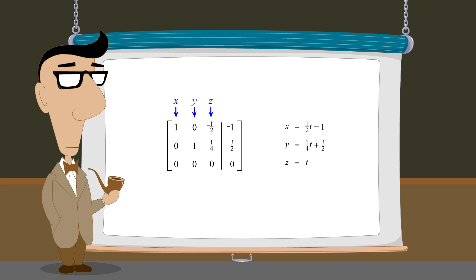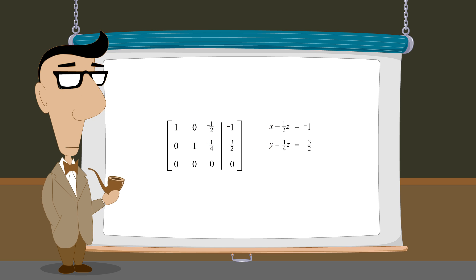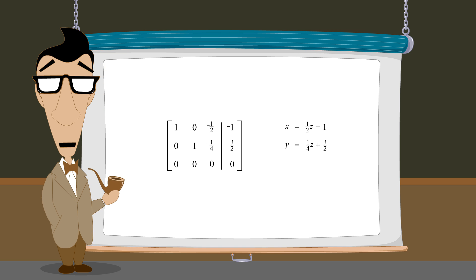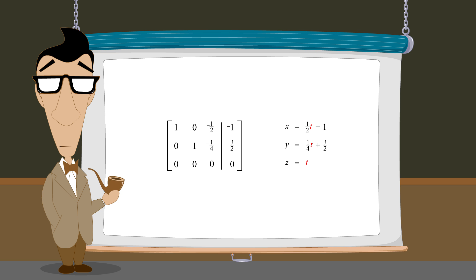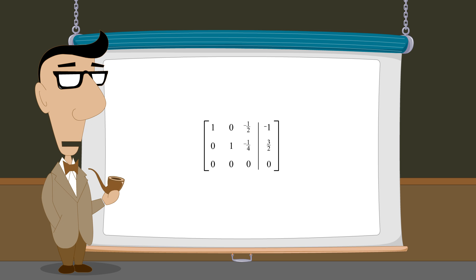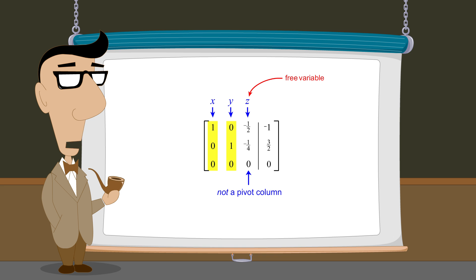Creating this set of parametric equations was simple. Since each dependent variable had a coefficient of 1 and appeared in only one equation, it was a simple matter to rewrite those equations so that each equation equated one dependent variable to an expression containing only the free variable. That free variable was then set equal to an independent parameter, which could then replace the free variable in the other equations. This gave us a set of parametric equations expressing each system variable as a function of a single parameter t. In this example, there was only one column left of the vertical line that was not a pivot column, and so there was only one free variable. Our solutions therefore contained only one parameter.